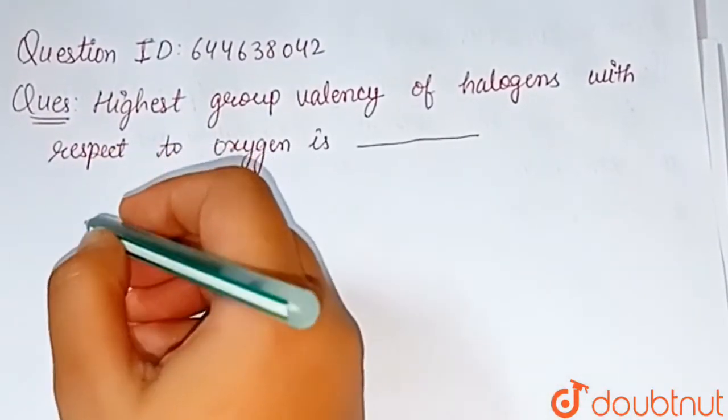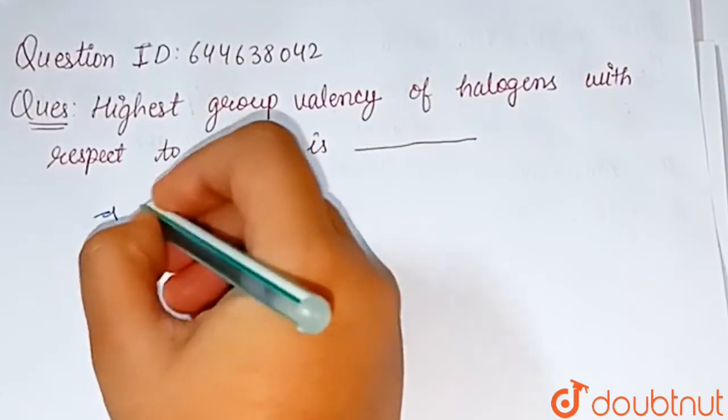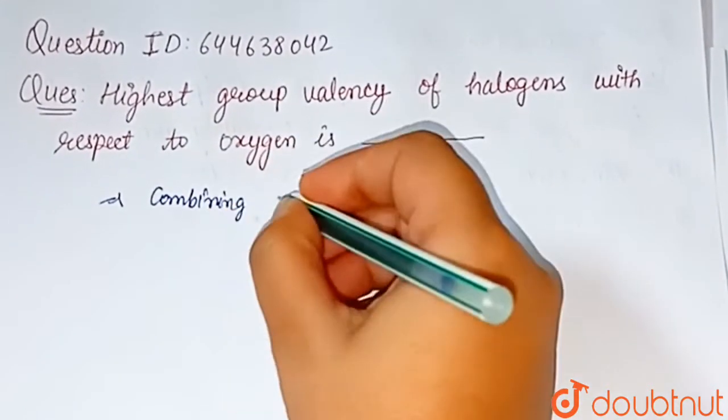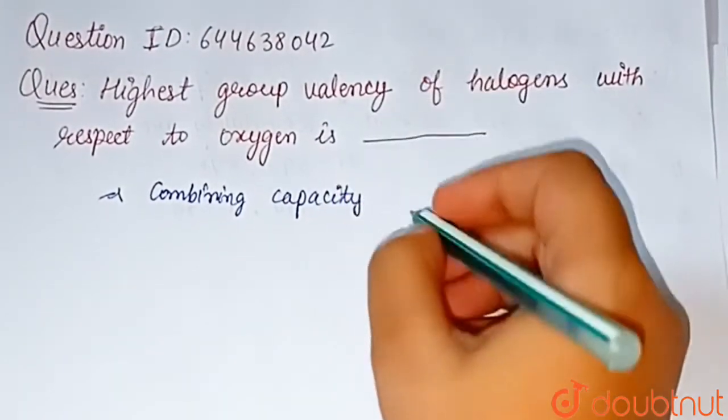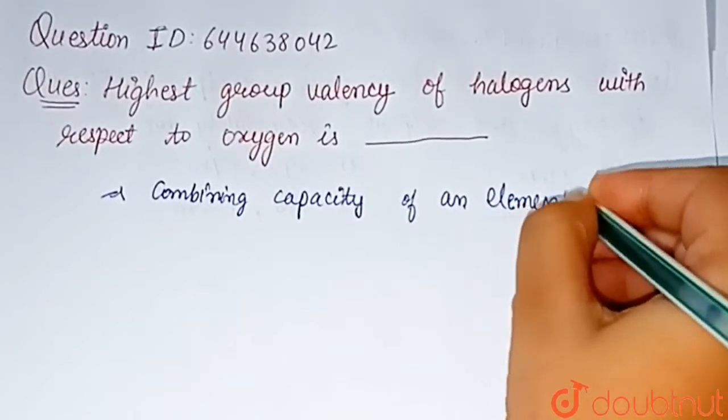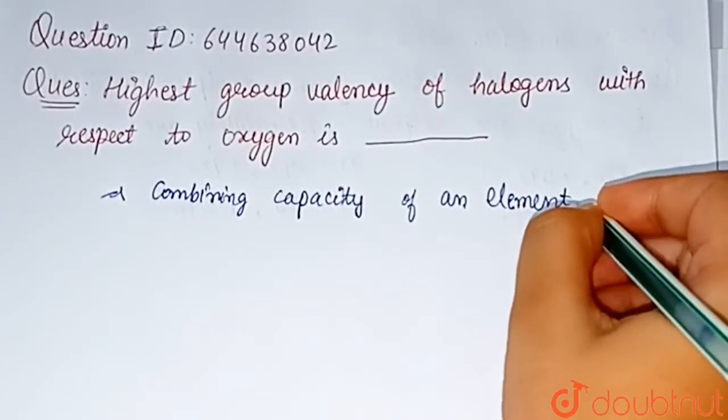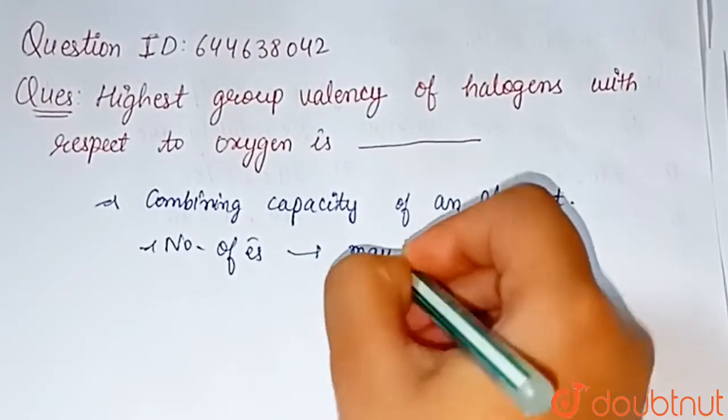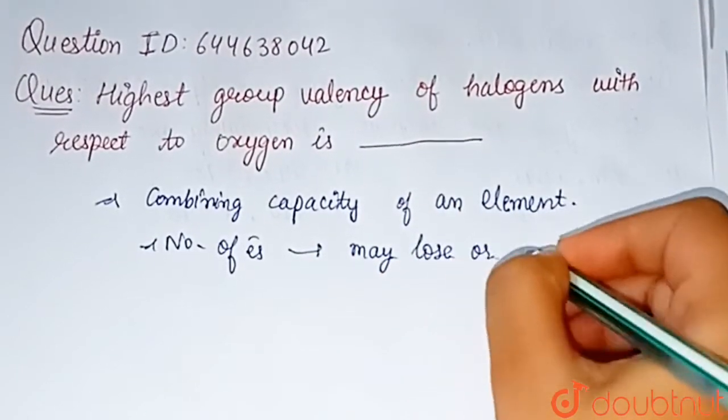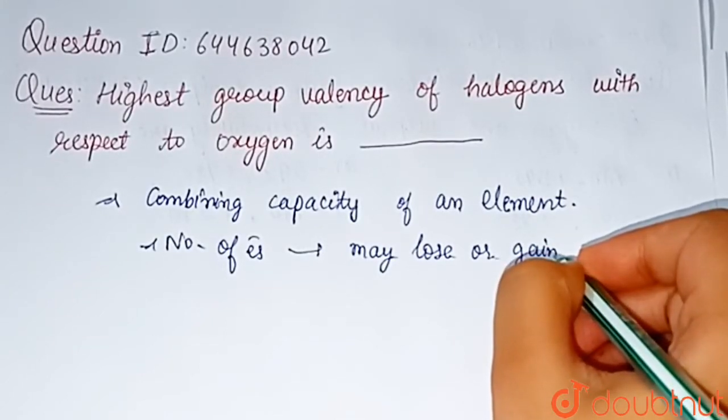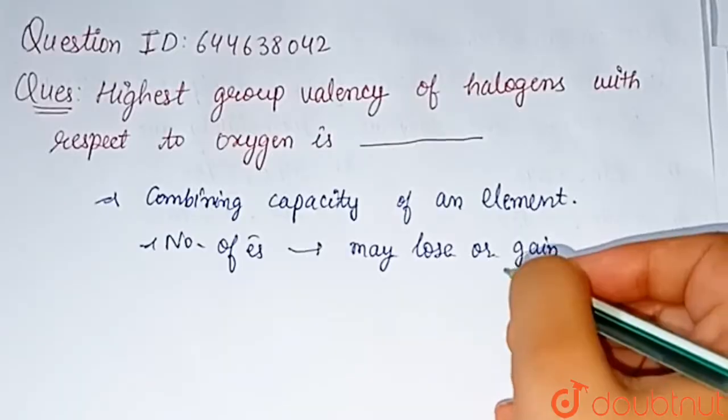First, we need to know what is valency. Combining capacity of an element is called valency. It can be defined as the number of electrons an atom may lose or gain during a chemical reaction, or the number of electrons shared.